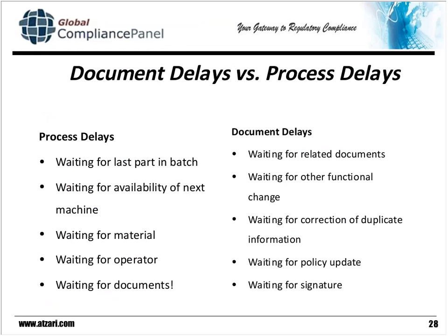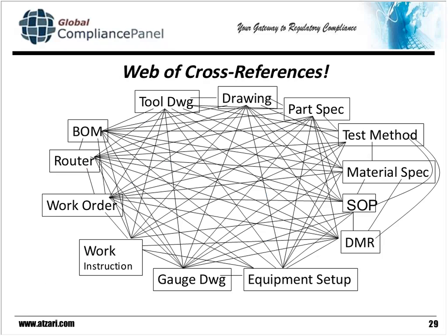Just like in lean manufacturing we have process delays, in lean documents we have document delays. The production of documents is just as important because a manufacturing plant can be delayed by waiting on material, waiting on product, waiting on people, but it can also be delayed by waiting on the right version of a document. And it doesn't matter what the reason for the delay is — a delay is a delay. What ends up happening with the traditional approach is we end up with this crazy web of cross-references where all the documents for a product family are pointing to each other because there isn't any unifying place for this information. And maintaining those cross-references becomes a full-time function in itself.